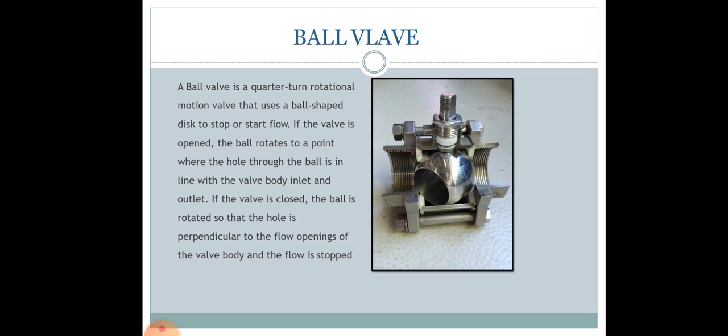A ball valve is a quarter-turn rotational motion valve which uses a ball-shaped disc to stop or start the flow. When the valve is opened, the ball rotates to a point where the hole through the ball is in line with the valve body inlet and outlet.